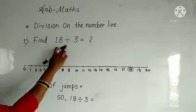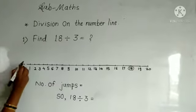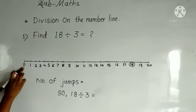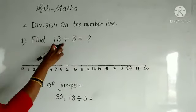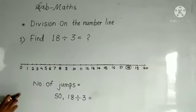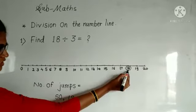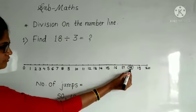Find 18 divided by 3. First, draw a number line from 0 to 20. See, our question is 18 divided by 3. So, first find the number 18. This is the number 18.